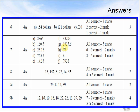G was 1,335.6. H: 8. I: 8. J was 7,938. Question 8: 13, 157, 8, 22, 14, 55, 29. Question 9A: 29, 8, 12, 39, 9. Question 9B: 12, 16, 19, 16, 18, 22, 22, 13, 29, 29, 29.